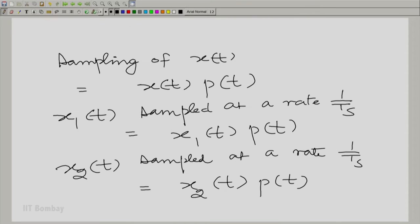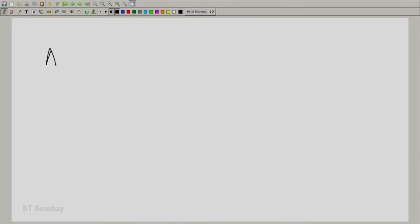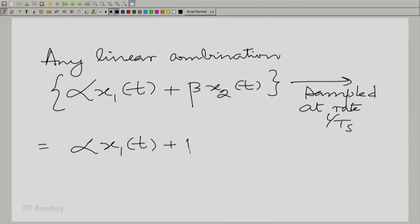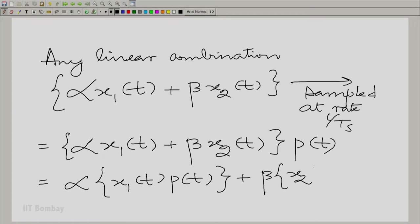And now, take any linear combination, alpha times x1(t) plus beta times x2(t) sampled. Of course, this is in the same way, sampled at 1/Ts is essentially the same signal multiplied by p(t), which can be expanded. So, in fact, we have proved the result here.